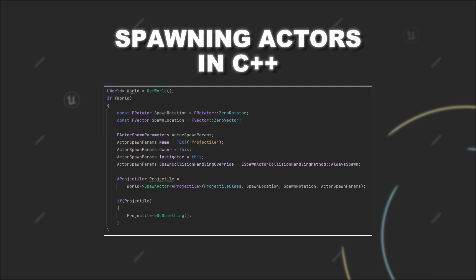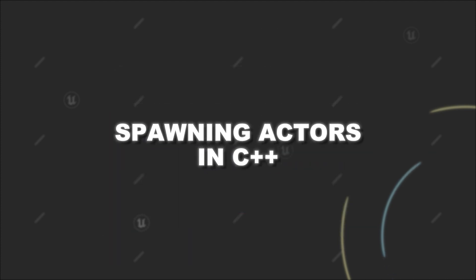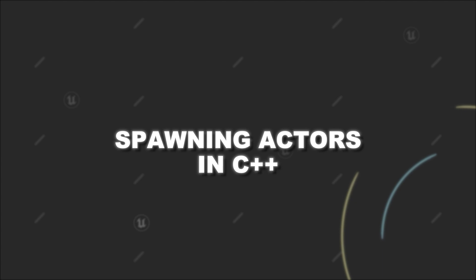However, this is all you need to provide when calling the SpawnActor function. As you can see, it will return a pointer to an actor after you call the function. It will be your newly created actor if the spawning process was successful; otherwise it will be a null pointer and therefore invalid. So if you have checked that your actor is valid, then you can execute further functionality on it. But this is all you need to know to instantiate new actors at runtime.